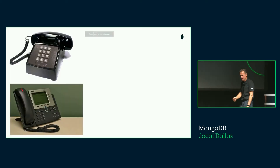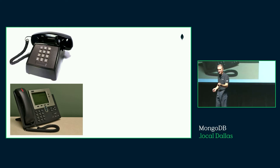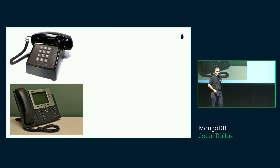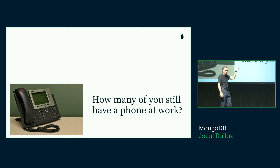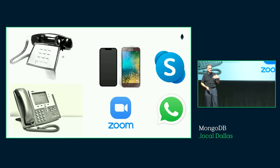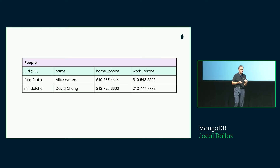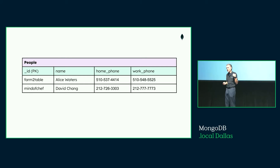When I started my career, there were two ways you could reach someone. You could call them on their phone at home, or you could call them at work. Today we have a cell phone, a Skype account, a Zoom account, WhatsApp, and whatever the next thing is going to be invented next month. If this is great for all of us, maybe it's not as great for people who did this kind of design many years ago.